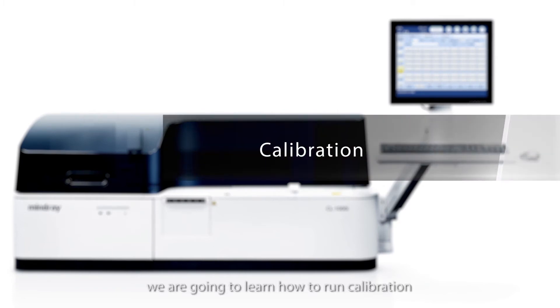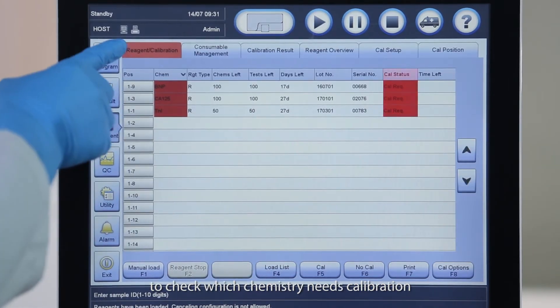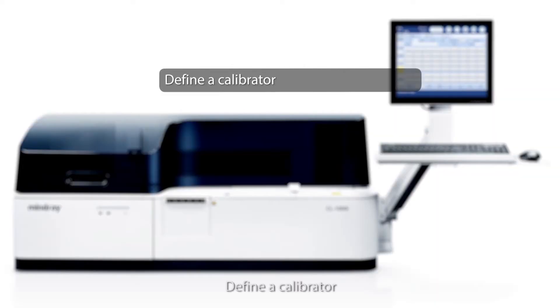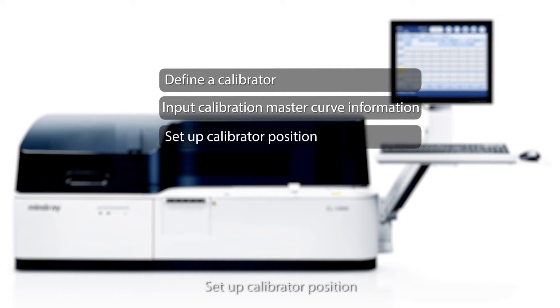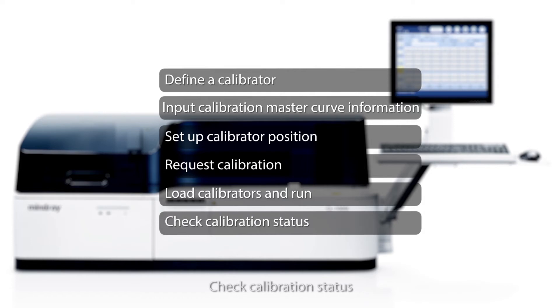Moving on, we are going to learn how to run calibration. You can go to the reagent calibration page to check which chemistry needs calibration. If you run a calibration, you can perform in the following order: define a calibrator, input calibration master curve information, set up calibrator position, request calibration, load calibrators and run, check calibration status.